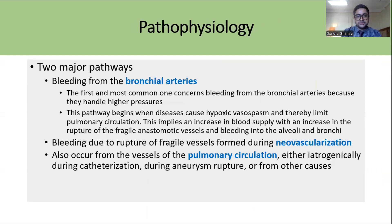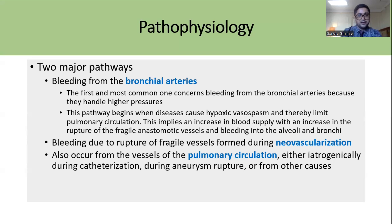There are basically two major pathophysiological pathways for Massive Hemoptysis. First is bleeding from the bronchial arteries, which usually occurs in the background of other diseases that cause hypoxic vasoconstriction of the pulmonary circulation, increasing blood supply from the bronchial circulation. Anastomoses or neovascularization vessels tend to rupture because of the high pressure. Second, bleeding can also occur from the pulmonary circulation, usually in cases of iatrogenic injuries during catheterization, aneurysm rupture, or other causes.